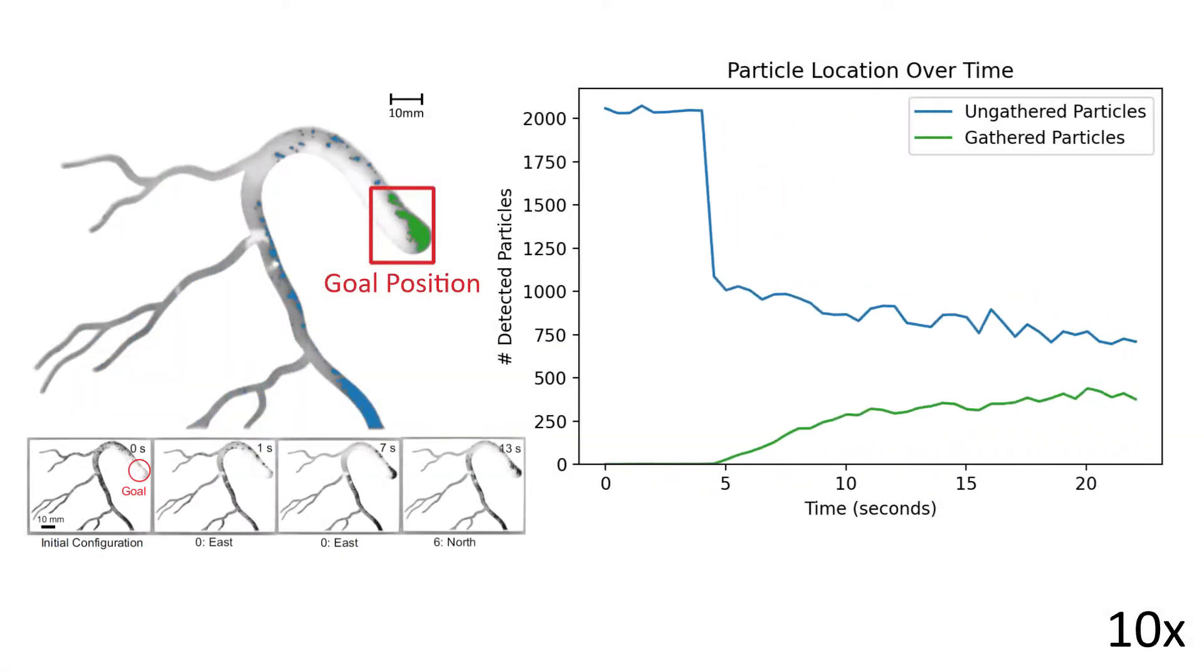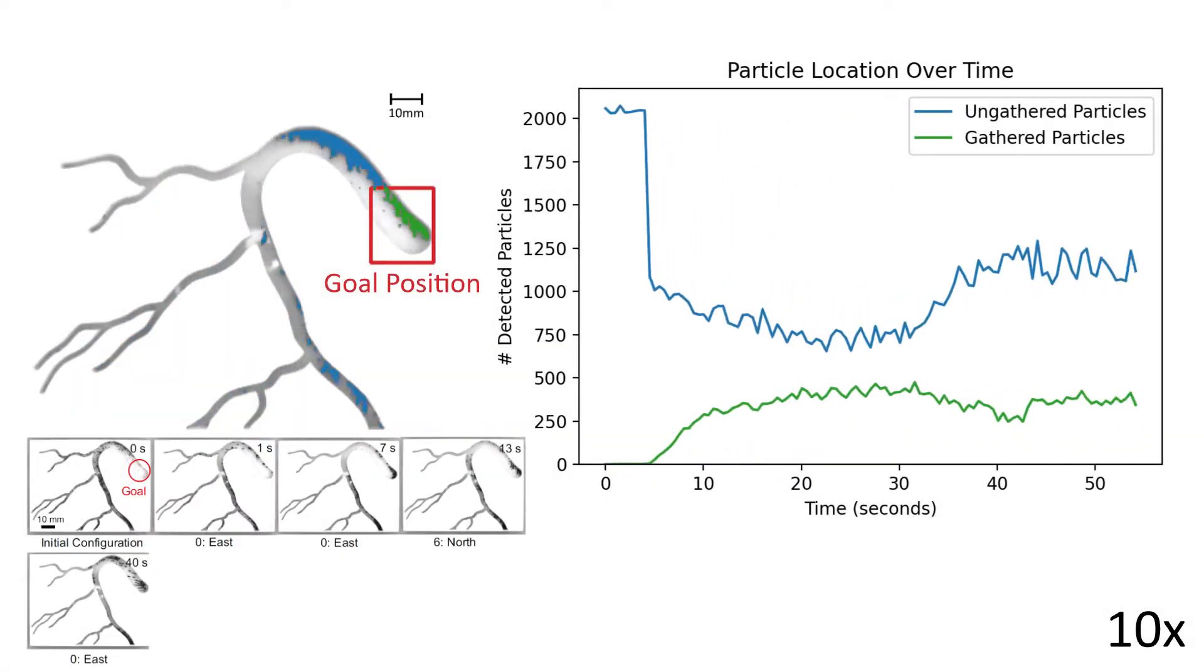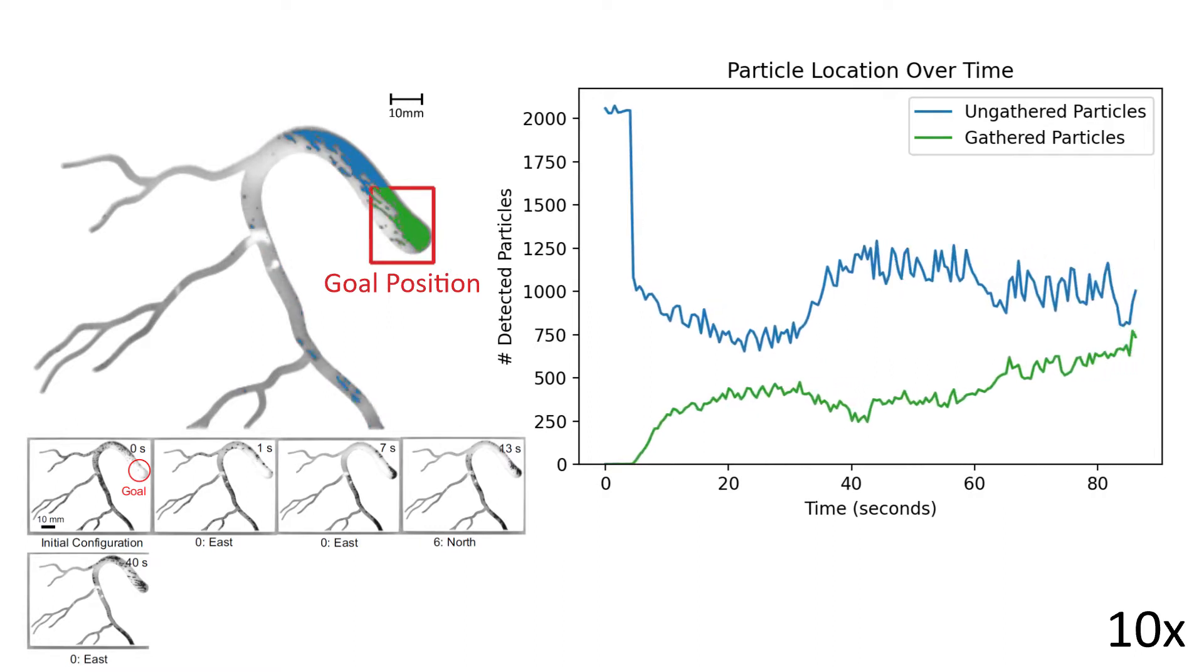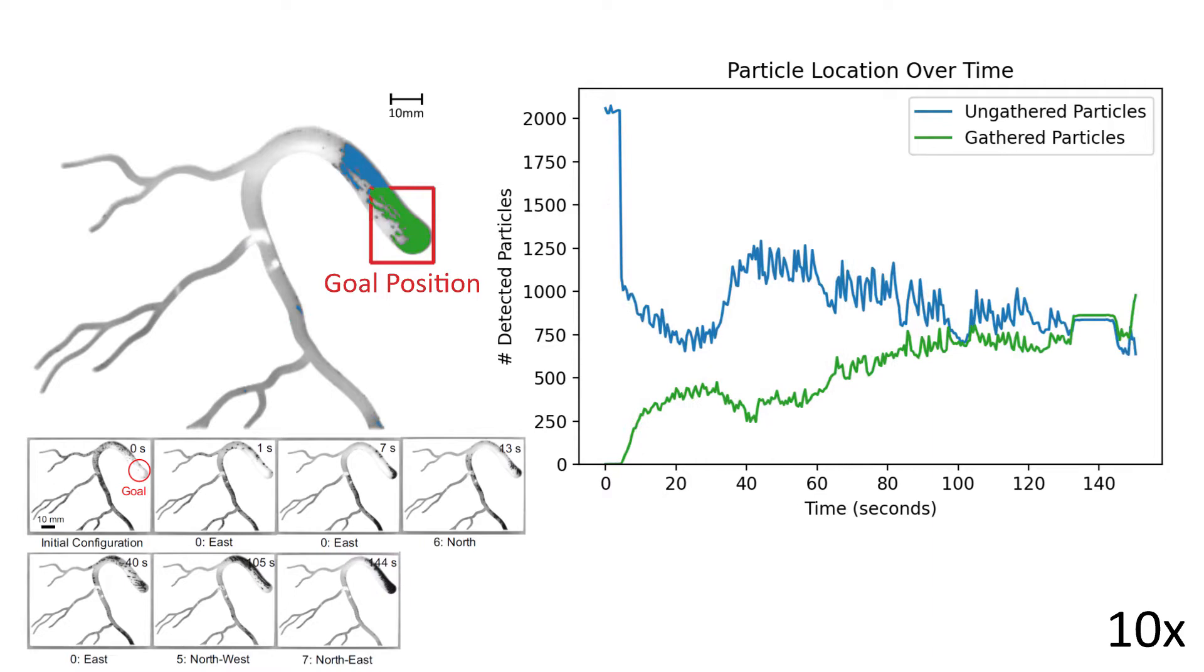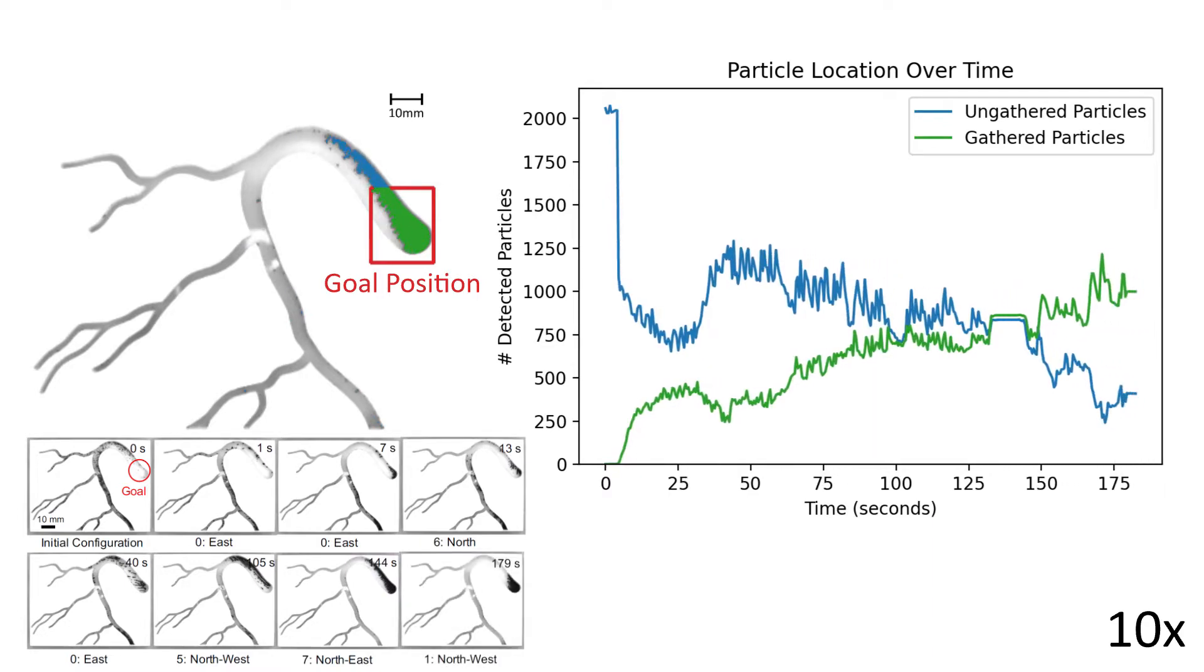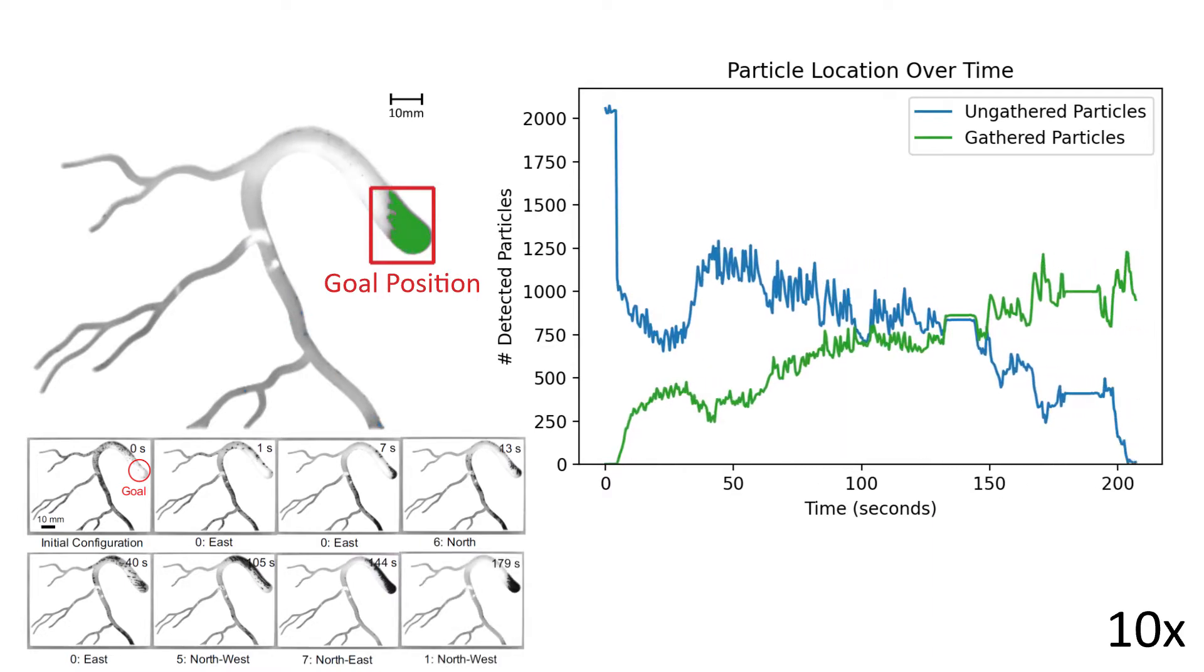Imagine you have many spread-out particles that you want to gather at a specific location in a maze. Your particles are all moved by an external magnetic field, so they all move in the same direction unless their path is blocked.